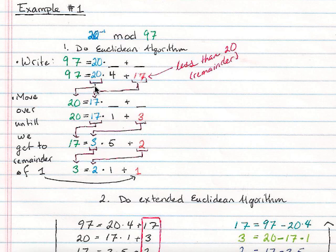Next, we want to move it over. So we move the 20 over here, and we move the remainder of the 17 over here. See, I have color coded, and we have the same exact format. So I rewrote it as 20 equals 17 times 1 plus 3. And 3 is the remainder.